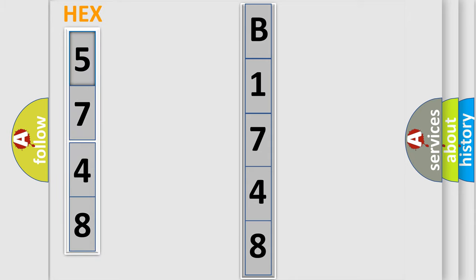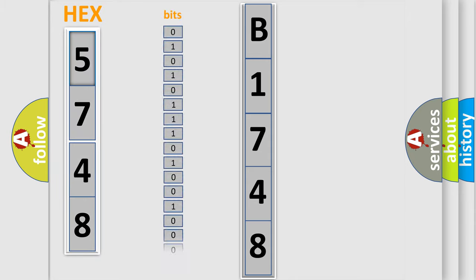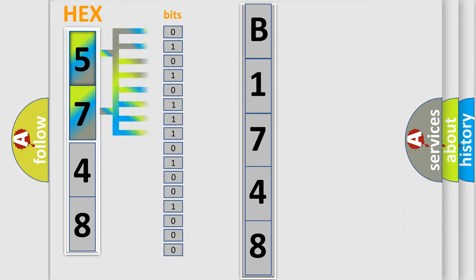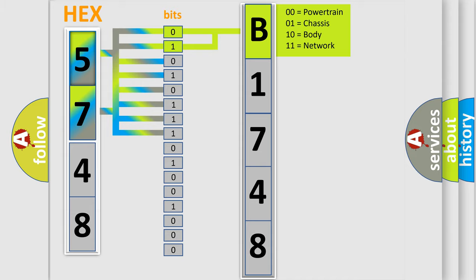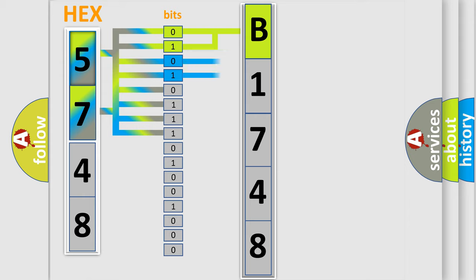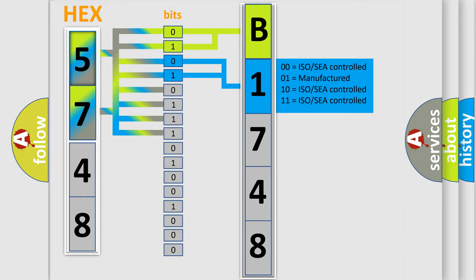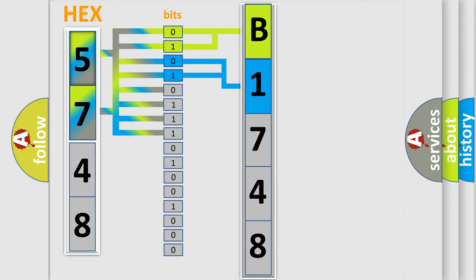The error code is split into two bytes consisting of 16 bits. One bit is the basic unit that each computer works with. The bit has two logical states: zero, low level, and one, high level. By combining the first two bits, the basic character of the error code is expressed. The next two bits determine the second character, and the last bits of the first byte define the third character of the code.